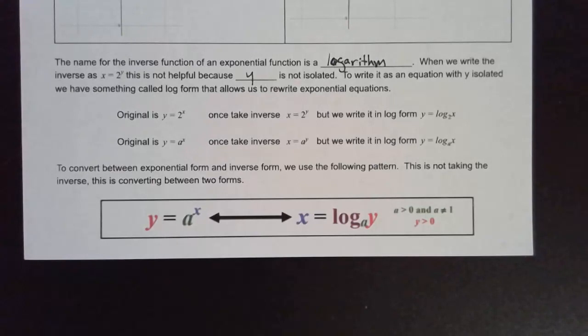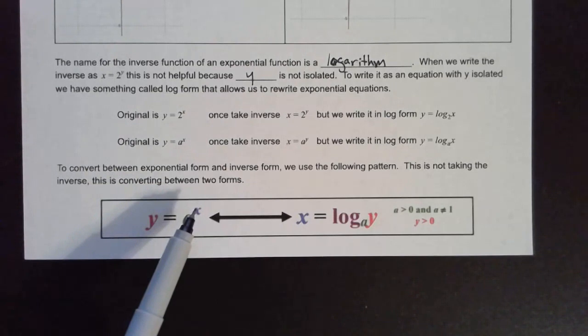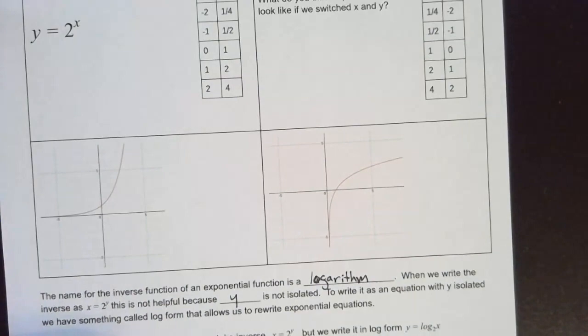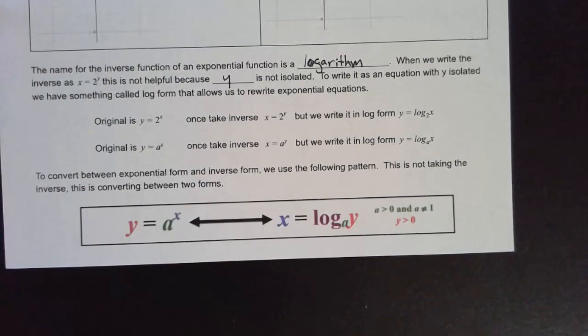To convert between exponential form and log form we use this pattern — this is not taking the inverse, this is converting between the two forms. The important part is the exponent is by itself on one side of the equation. That's the reason we use this form, so that it is a proper function with outputs on the correct axis.